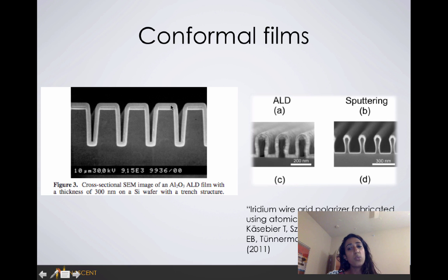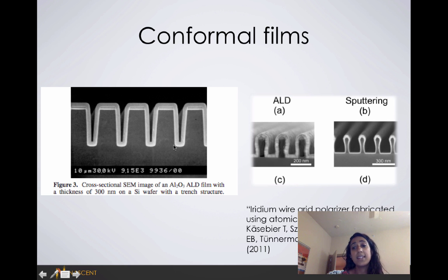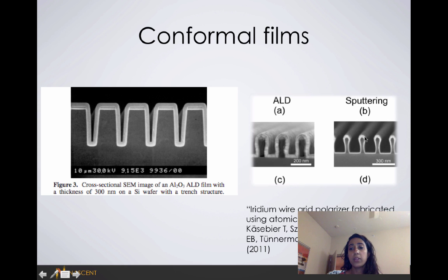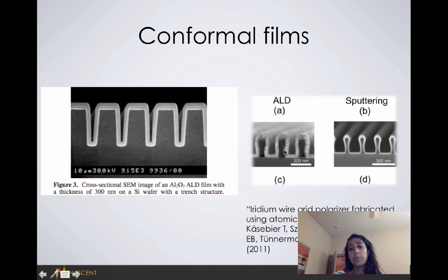Because we're only depositing one layer at a time, and can only react with one side at a time, you can see the difference between atomic layer deposition and sputtering. With sputtering, you get non-uniform thickness at the tops of these nanolines, whereas in ALD you see uniform deposition throughout.